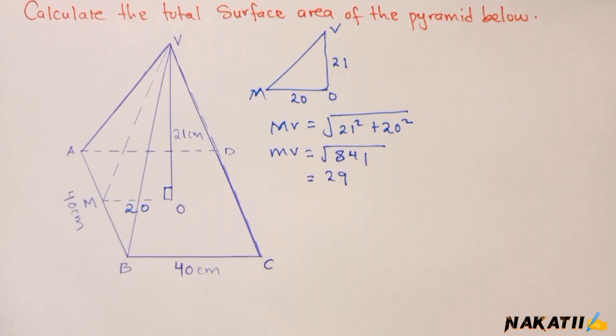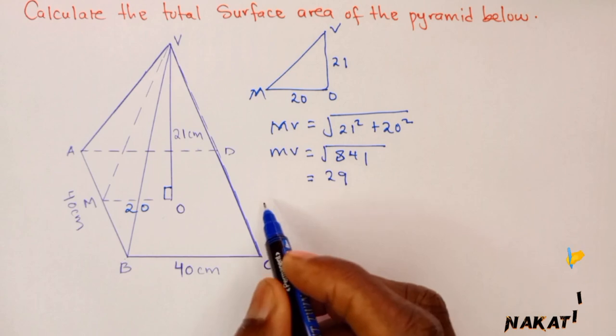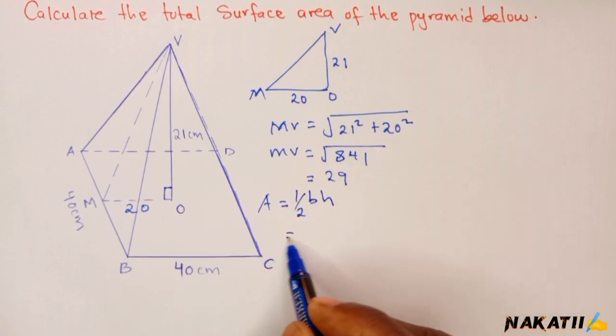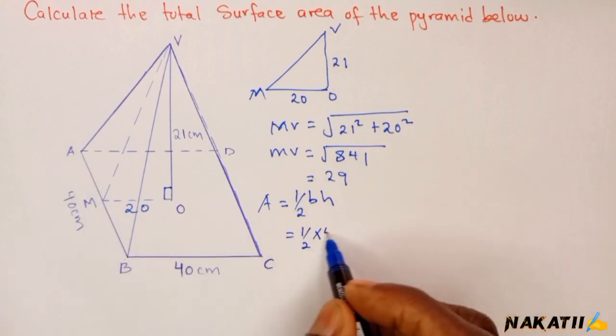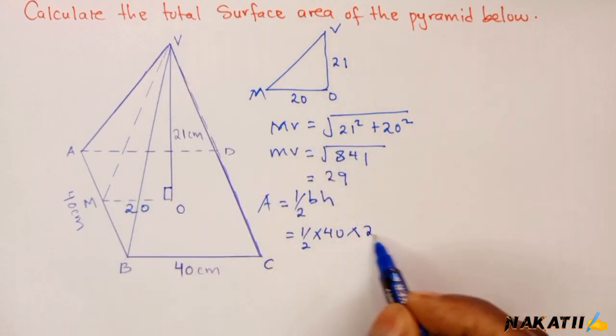We now need to get the area of our triangular face. We're going to say it is half base times height. This will be a half times the base from A to B, which is 40, times the height which I found to be 29.